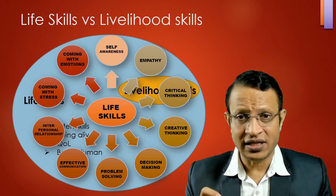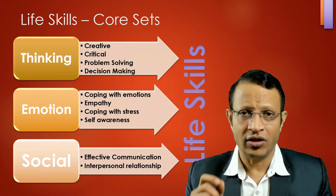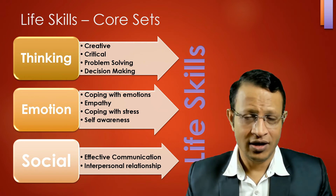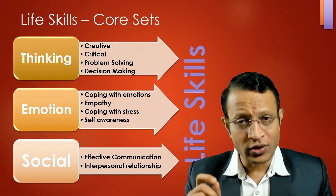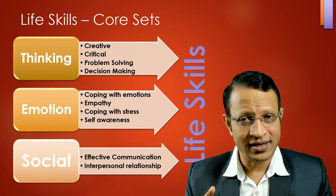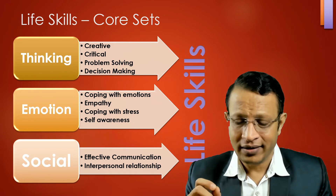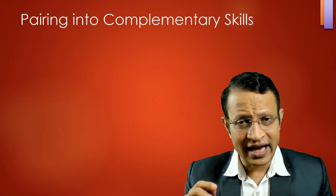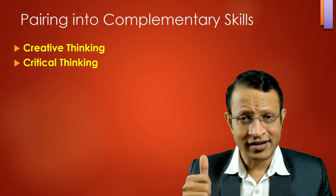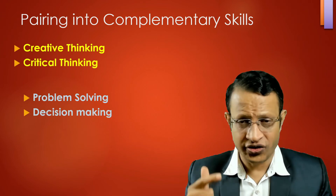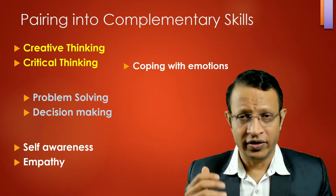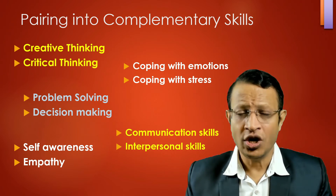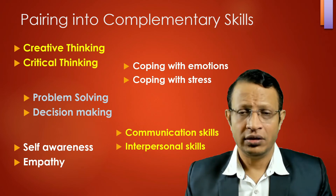These are the essential life skills which need to be learned by every child and adolescent. They can be divided into three categories: the thinking domain, the emotional domain, and the social domain. All 10 skills form the core set. They can also be paired into five components: creative thinking and critical thinking; problem solving and decision making; self-awareness and empathy; coping with emotions and coping with stress; and communication skills and interpersonal skills.